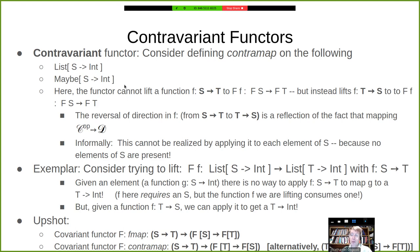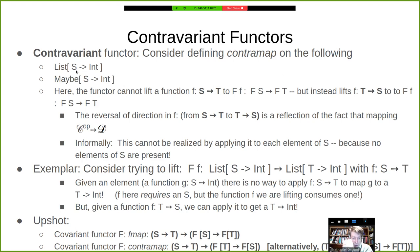If we're given a list of these S-to-int functions — consider a given one of those — we have something that takes in an S. If we're given a function from S to T, that doesn't directly help us get a T-to-int, because the function takes in an S and our available function goes from S to T, not from T to int. This is where the contravariant nature becomes essential.